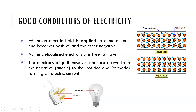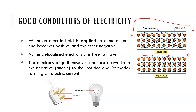When it comes to metals, one of the first things we think about is their ability to conduct electricity — we use copper wires and various things to conduct electricity. It's critical that we get the terminology right. When an electric field is applied to a metal, one end becomes positive and the other becomes negative. The delocalized electrons are then free to move; they align in the direction of the field and move towards the positive end, because negative charges are attracted to positive charges.